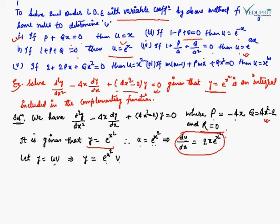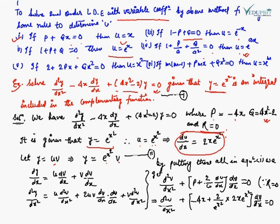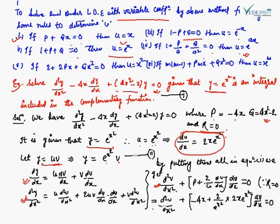We suppose y = u·v where u = e^(x²), so y = e^(x²)·v. We find dy/dx and d²y/dx² and substitute into the original equation. Putting all values into the linear form: d²v/dx² + [P + (2/u)·(du/dx)]·dv/dx = 0, since R = 0. Substituting P = -4x, u = e^(x²), and du/dx = 2x·e^(x²).